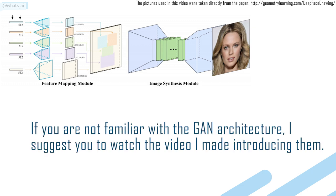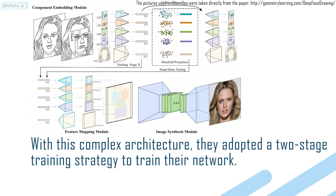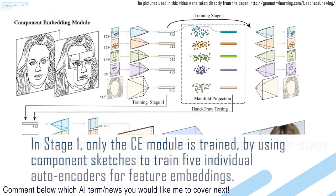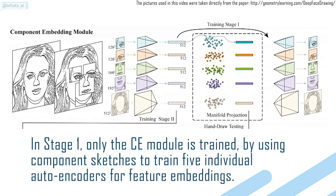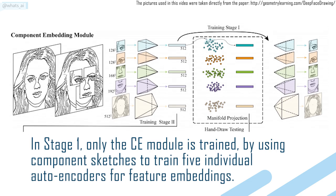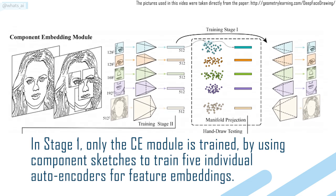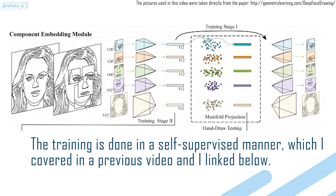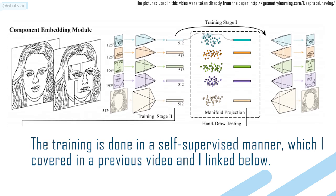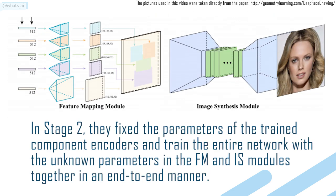If you are not familiar with the GAN architecture, I suggest you watch the video I made introducing them. With this complex architecture, they adopted a two-stage training strategy. In stage 1, only the Component Embedding module is trained, using component sketches to train five individual autoencoders for feature embeddings in a self-supervised manner. In stage 2, they fix the parameters of the trained component encoders and train the entire network with the unknown parameters in the feature mapping and image synthesis modules together in an end-to-end manner.